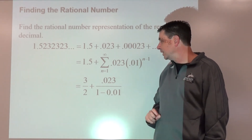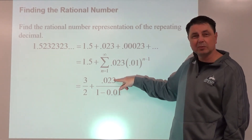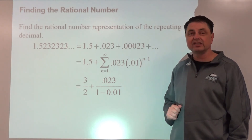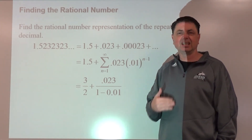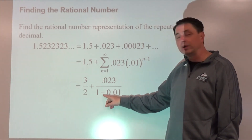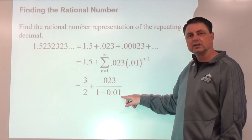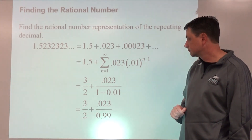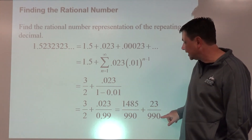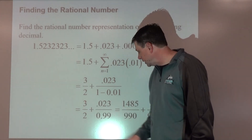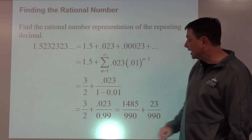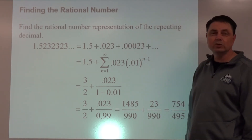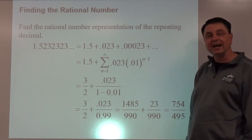Use decimal busting — there are three decimal places in the numerator and two in the denominator, so multiply by 1000, sliding the decimal three places right. The 0.99 becomes 990, giving 23 over 990. Finding a common denominator with 3/2: 990 divided by 2 is 495, so multiply 3 by 495 and add. Reducing gives 754 over 495.